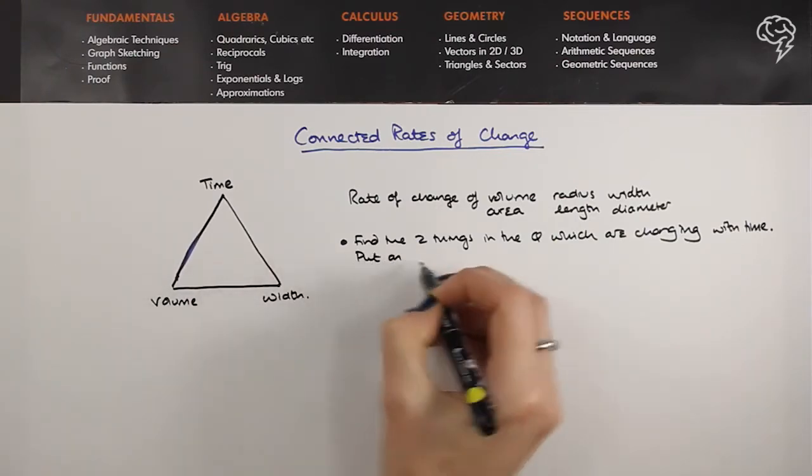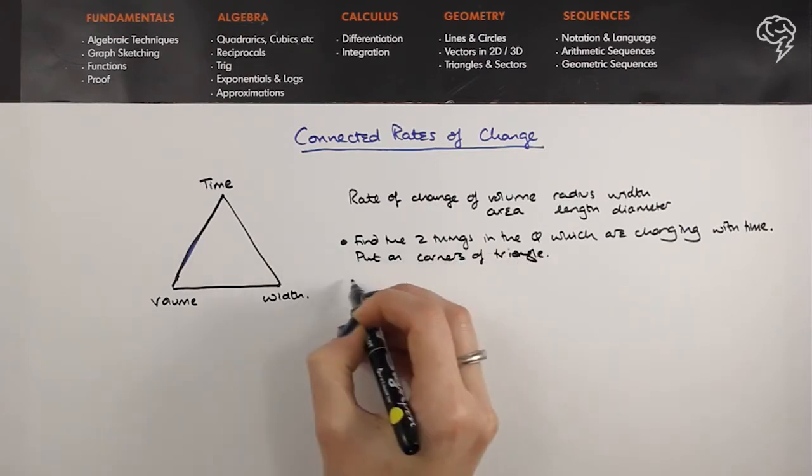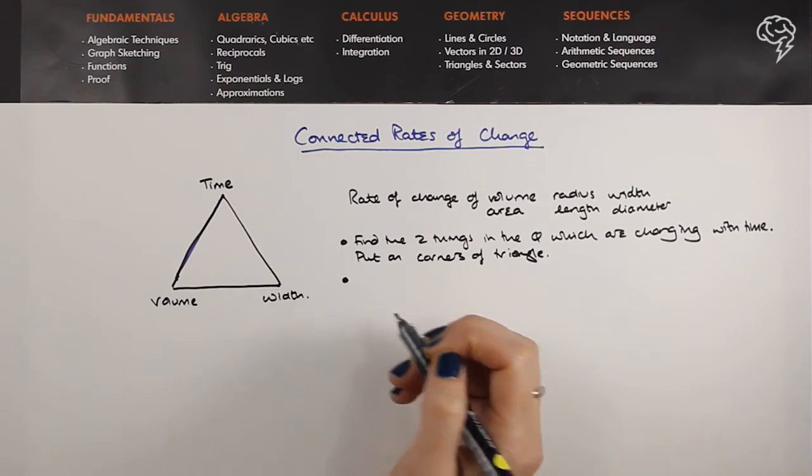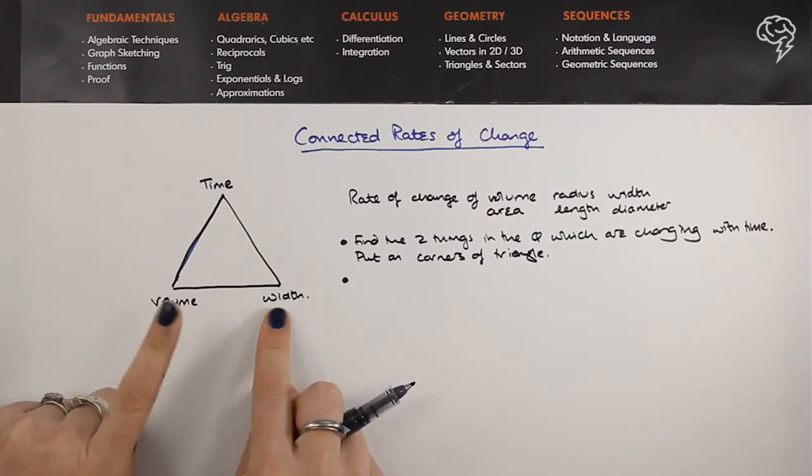Okay, so you find those two things in the question and you put them here and here on the triangle. Next, you need to form an equation linking these two. Now you might be given it, but you might have to do it yourself, but it's very very important that we form an equation.